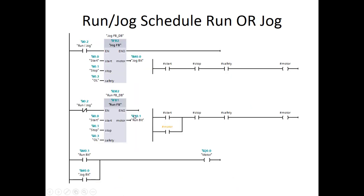What we did differently is we wrote subroutines using local tags. Here's the example of a local tag going into this subroutine, and here's the example of a local tag going into this subroutine. Now remember, I have a start here and a start here, but because these are local tags, this subroutine doesn't understand what this subroutine is doing at all. These are two different tags — if this one's true that doesn't mean this one is true.